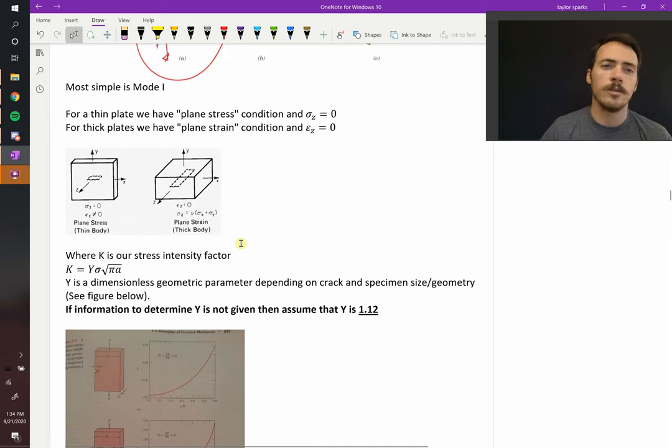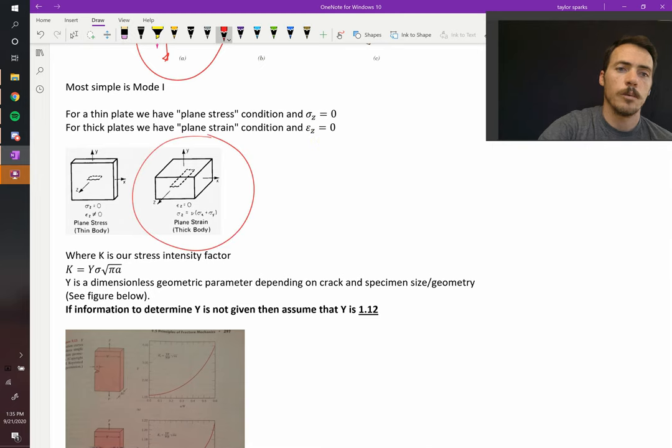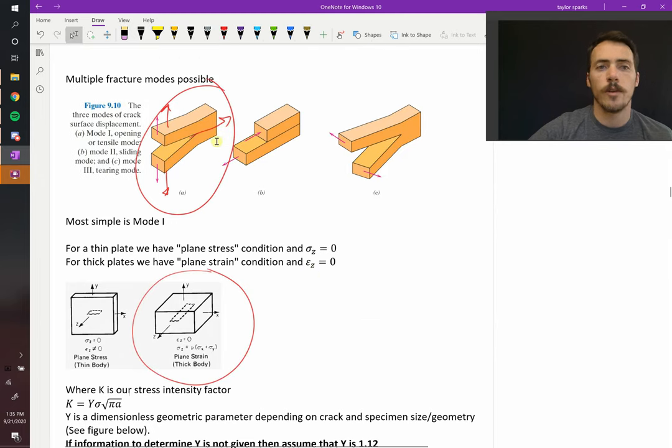We're also going to look at two scenarios. You've got thin plate. We call this plane stress. In that case, your stress in the z direction is basically equal to zero. And then you've got thick plates where you have plane strain condition. In that case, your strain in the z direction is basically equal to zero. We're only going to consider one of these scenarios, and that's this one right here. We're going to consider the plane strain solution to mode 1 fracture.